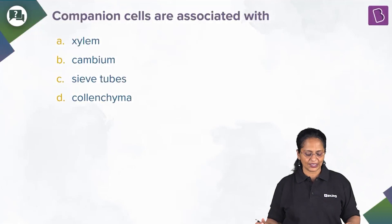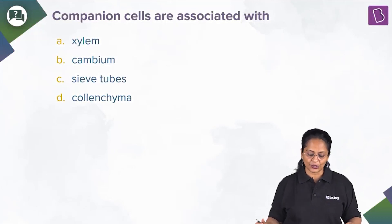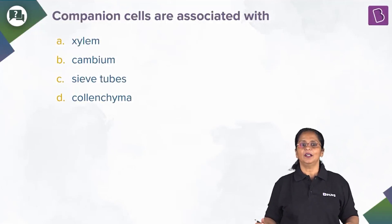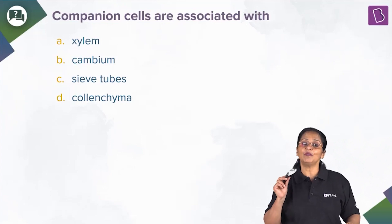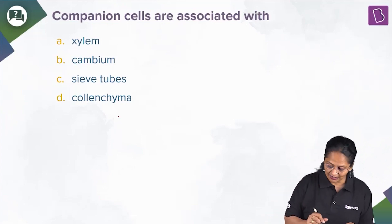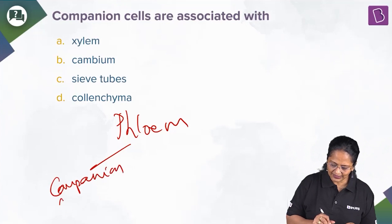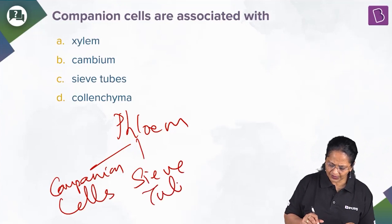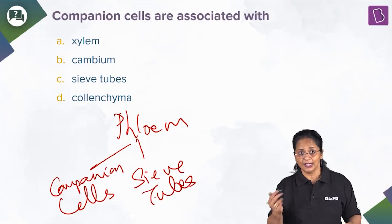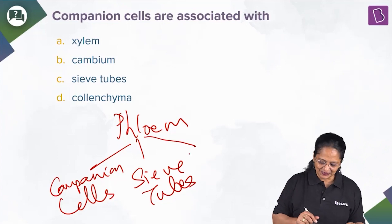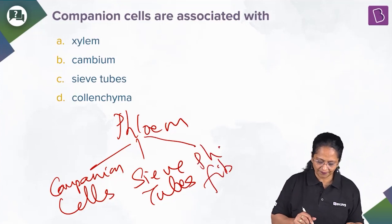Let us now look at this question. Companion cells are associated with xylem, cambium, sieve tubes, or collenchyma? Companion cells are part of the food-conducting tissue, that is the phloem. Phloem is made up of companion cells, sieve cells or sieve tubes. Sieve tubes are found in angiosperms; sieve cells are found in gymnosperms. Then you have phloem fibers and phloem parenchyma.